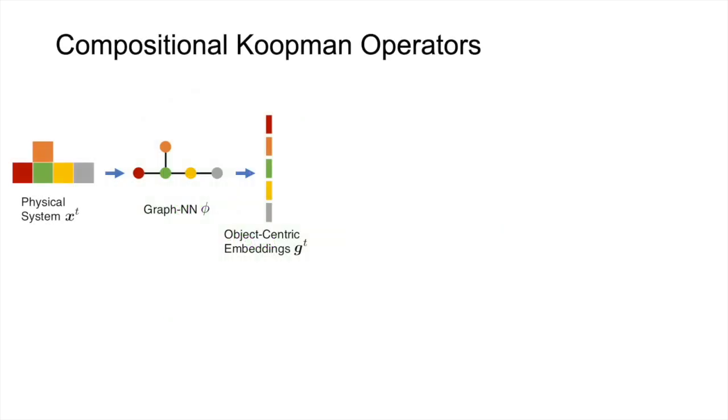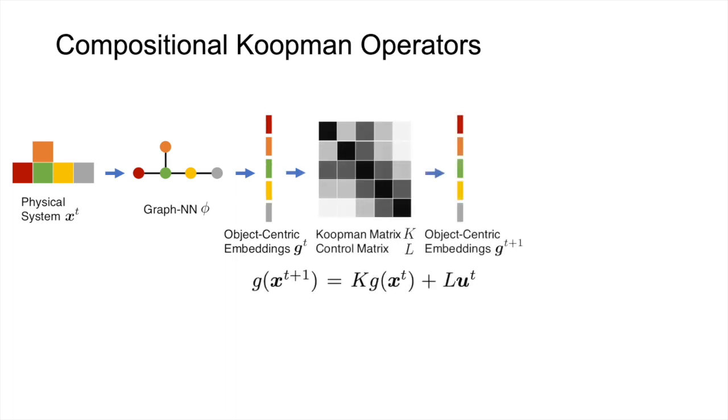Specifically, our model uses graph neural network to encode the system state X and generate object-centric embedding G. In the embedding space, the dynamics is linear, as shown in the equation. The linear coefficient has two parts, which we call the Koopman matrix K and the control matrix L.